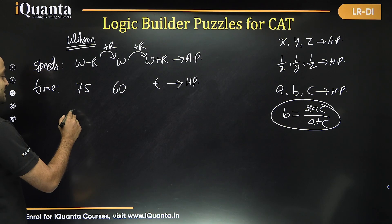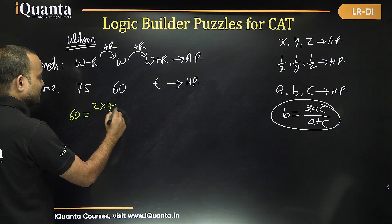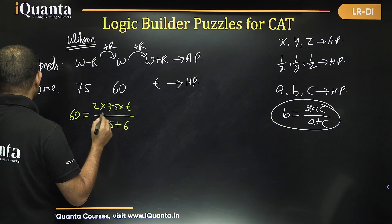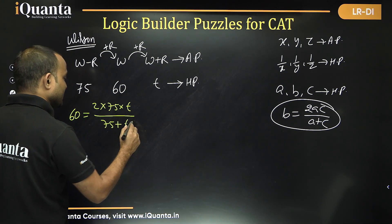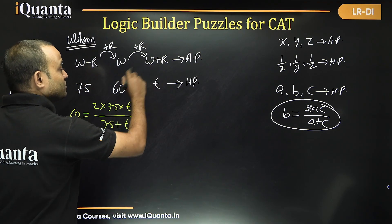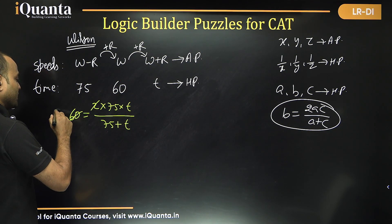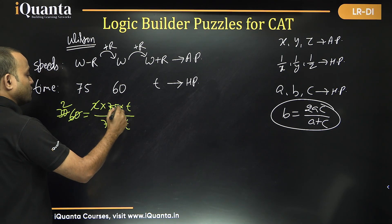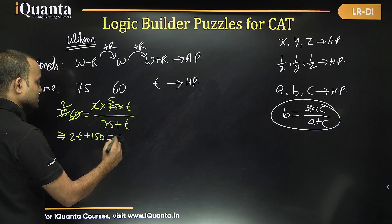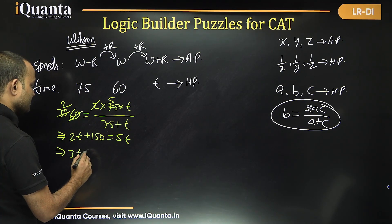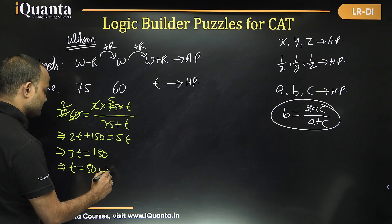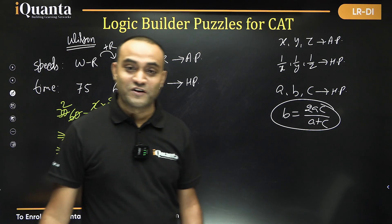Using the HP formula: 60 = 2 × 75 × T ÷ (75 + T). Solving: 60(75 + T) = 150T → 4500 + 60T = 150T → 3T = 150 → T = 50 minutes. This gives Wilson's return time very quickly without needing to use the distance concept.